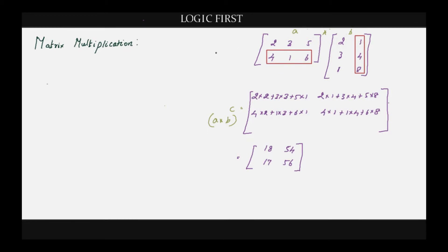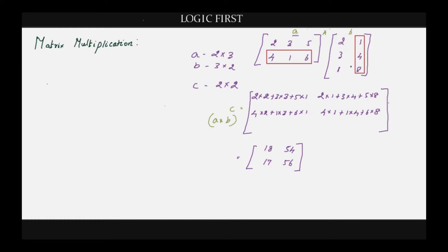Here A is a 2×3 matrix because it has 2 rows and 3 columns. Similarly B is a 3×2 matrix because it has 3 rows and 2 columns. You can see that C is a 2×2 matrix. Whenever you multiply, you are taking one row at a time from matrix A and one column at a time from matrix B.